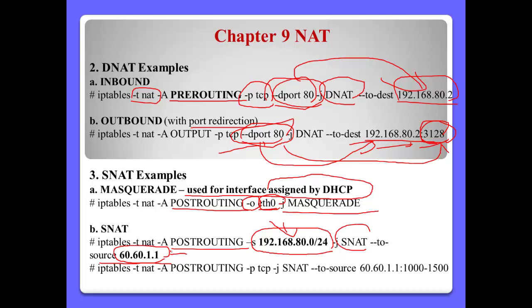60.60.1.1 is our public IP address used on the internet. For similar Source NAT, the source address 60.60.1.1 is the public IP we are using. According to the number of clients, we can define the exact number of ports — we call this PAT (Port Address Translation).